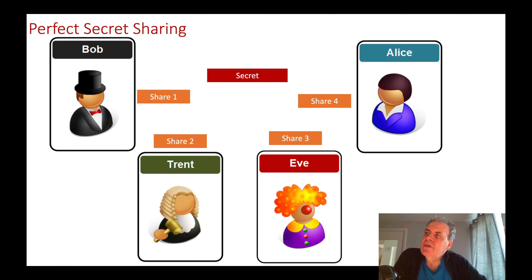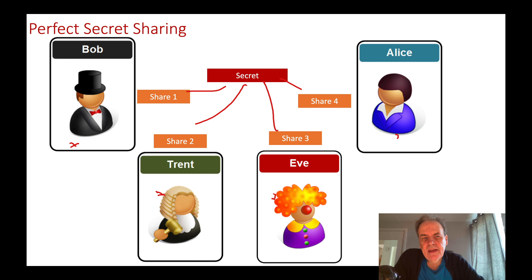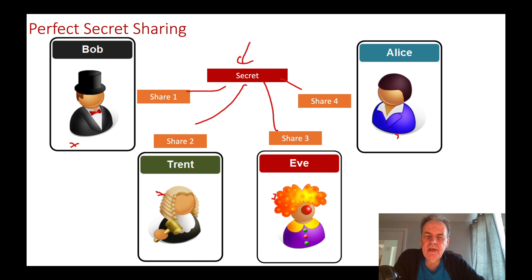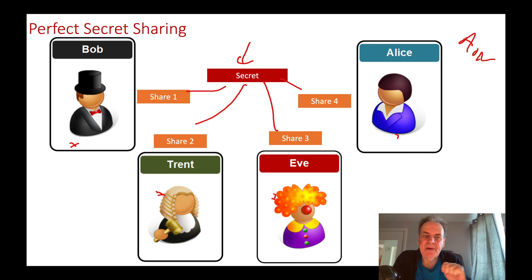It was Adi Shamir who came up with the concept of perfect secret sharing. The question is: is it possible for Bob, Trent, Eve, and Alice to share a secret by splitting it into a number of shares? In an all-or-nothing scheme, we can only rebuild the secret if we bring all the shares back together. If we only have three of the shares, it is not possible to get the secret back again.